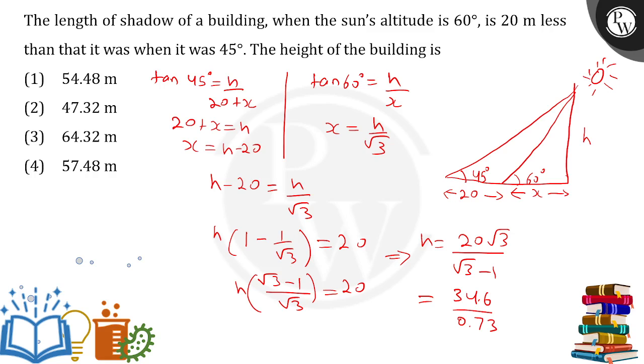this will come out to be somewhat 4.73. It is not 4.73, sorry, 47.3 something. So I can see 47.3 something is option number 2 and that will be answered.